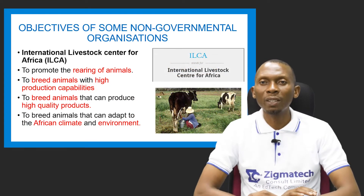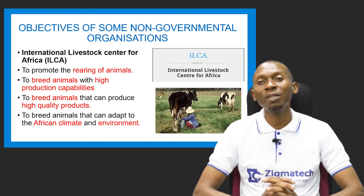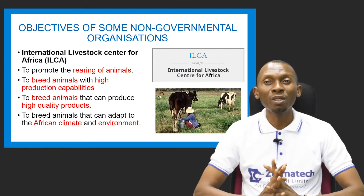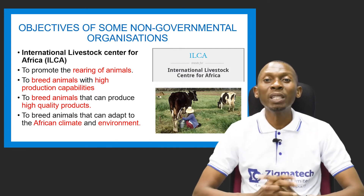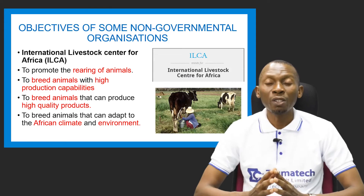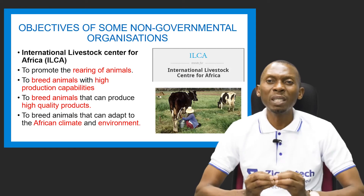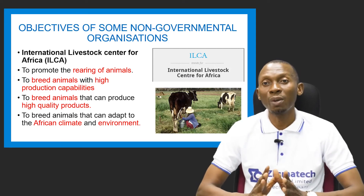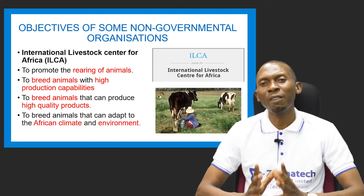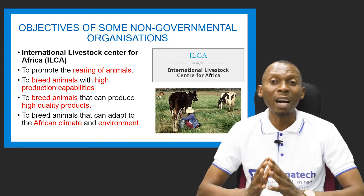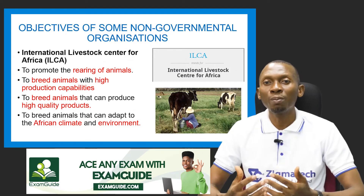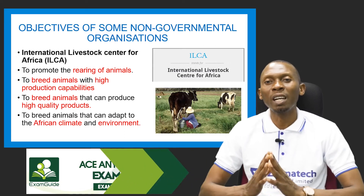We have another non-governmental organization called ILCA, which is International Livestock Center for Africa. Its objectives are to promote the rearing of animals, to encourage farmers to keep animals, to breed animals with high production capabilities in terms of milk, meat, eggs, and skin. They also breed animals that can adapt to the African climate and environment — a tropical climate which is harsh due to high temperatures.